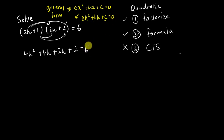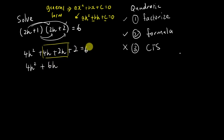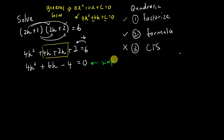The general form must equal zero, so I need to move the 6 to the other side. For 4h² there's nothing to combine, but 4h and 2h are the same power so they combine to give 6h. Moving positive 6 to the other side gives negative 6, so 2 minus 6 gives negative 4. So we have 4h² + 6h − 4 = 0. I'll also check whether this equation can be further simplified — all the numbers are even, so I can divide the whole equation by 2.